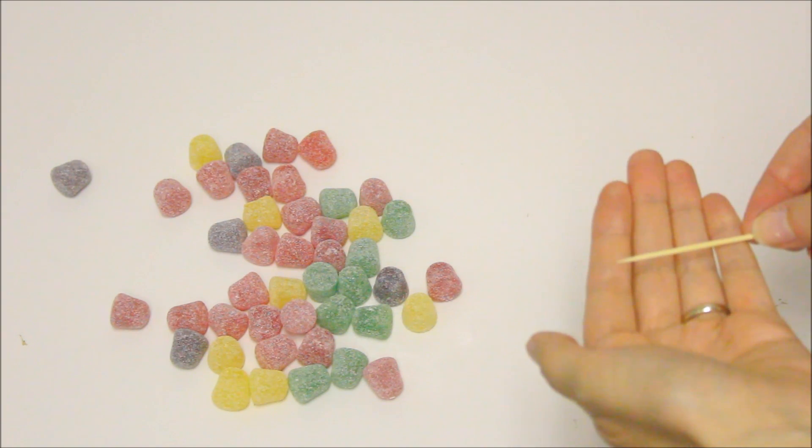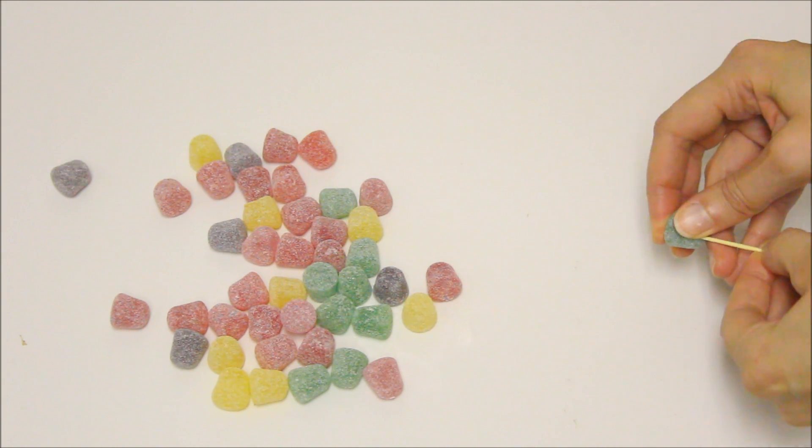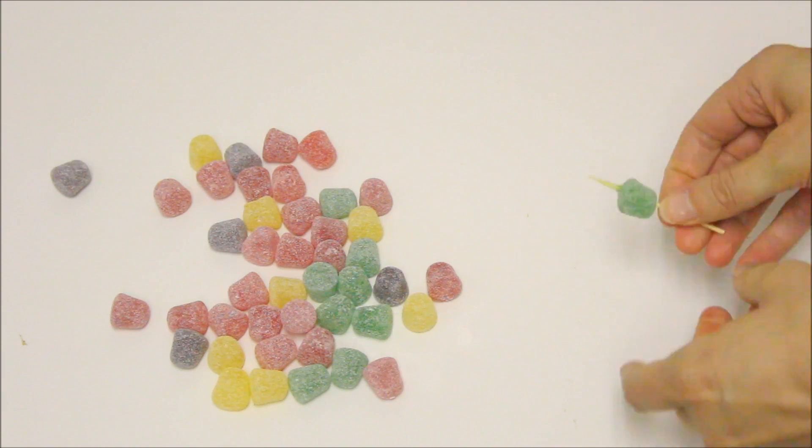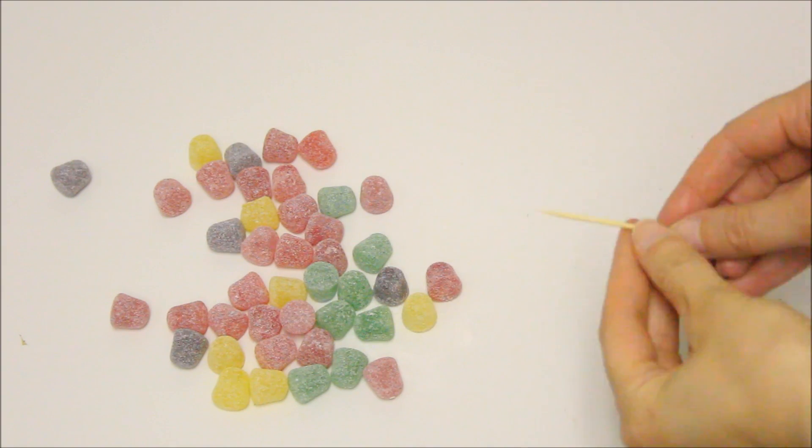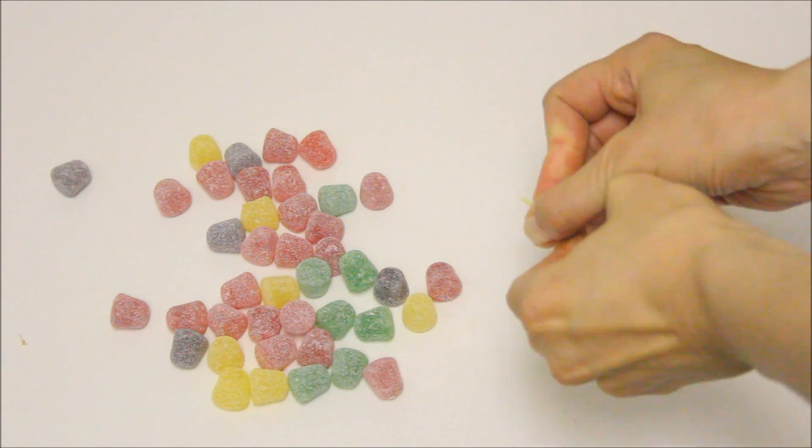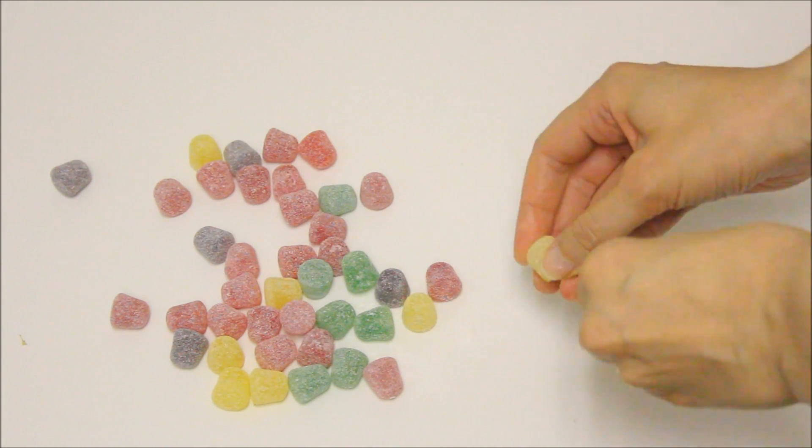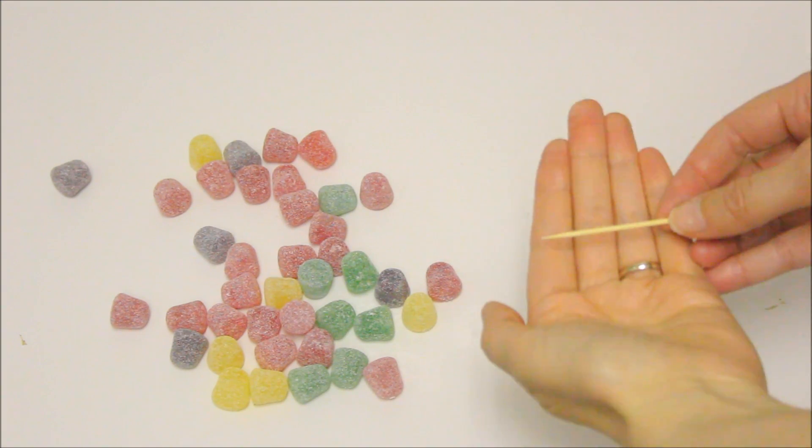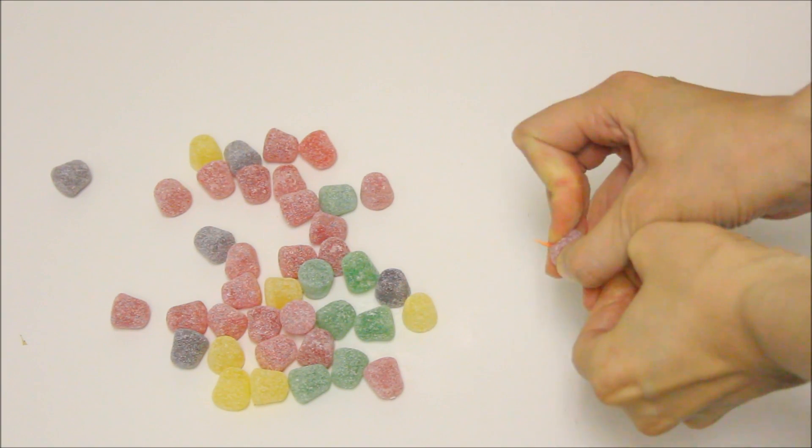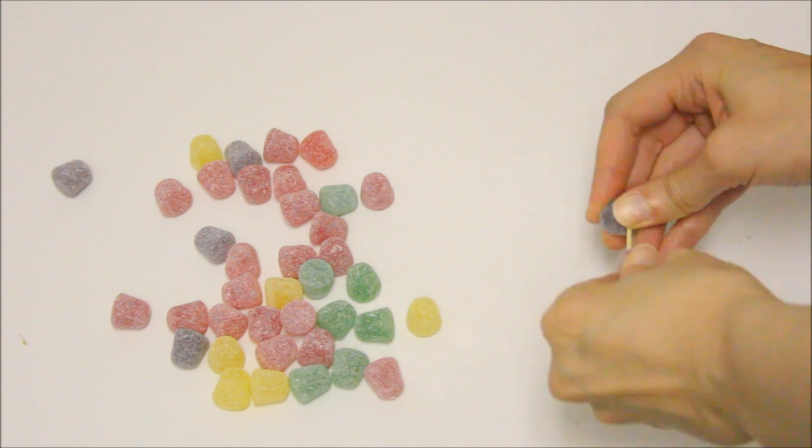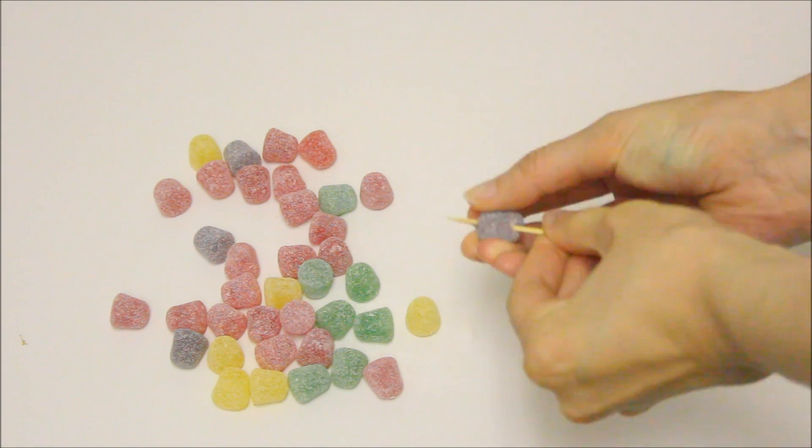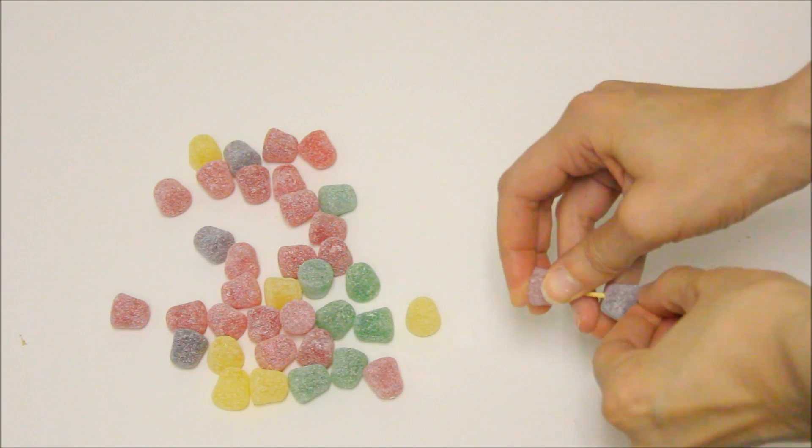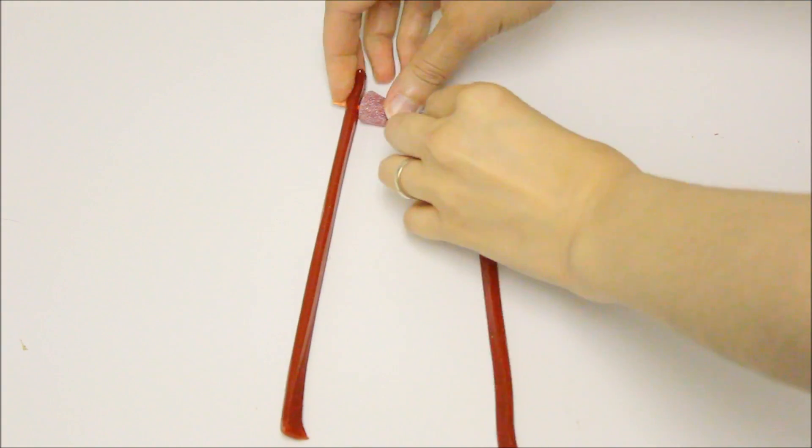Now let's put the jujubes on some toothpicks and attach the toothpicks to each licorice strand.